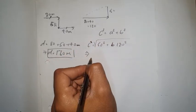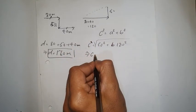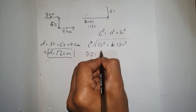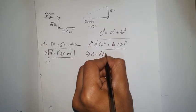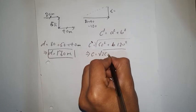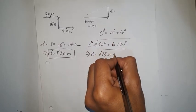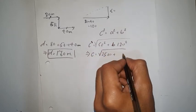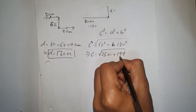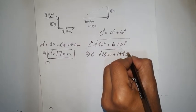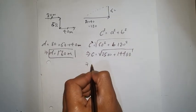Now we find the squares: the square of 50 is 2,500, and the square of 120 is 14,400.